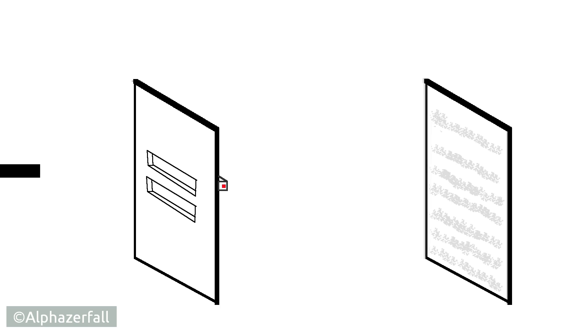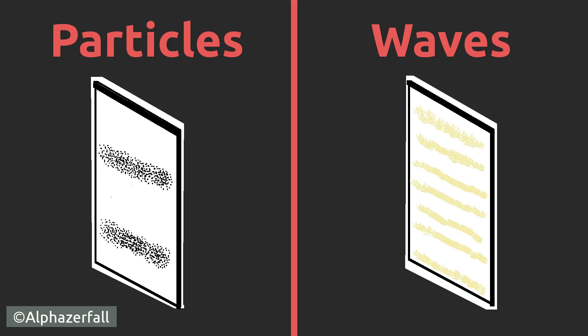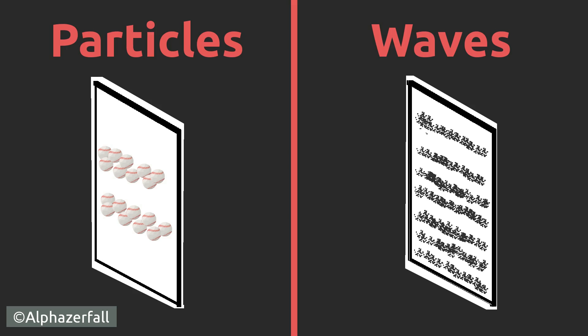We now stand in front of a big question: why does the electron act like particles if we observe it and why does it act like waves if we do not?